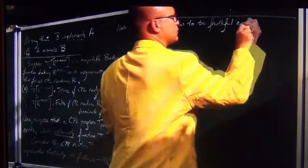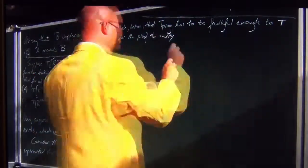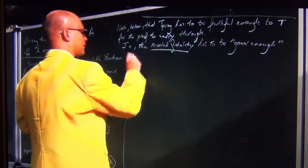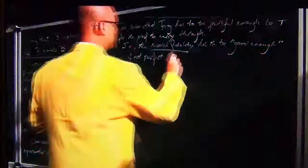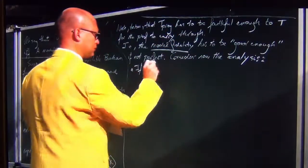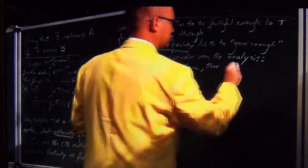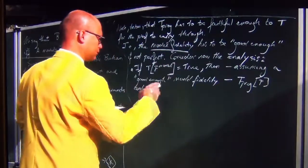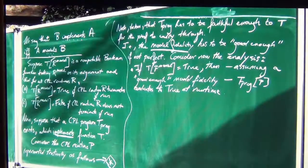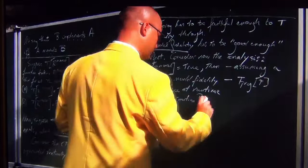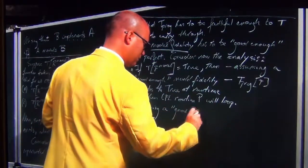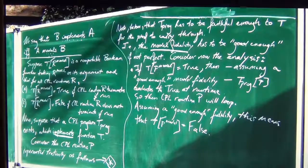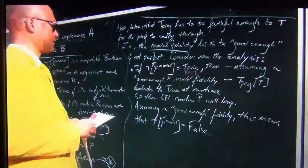Note that T-program has to be faithful enough to T for the proof to carry through — i.e., the model fidelity has to be good enough, if not perfect. This is something that Strachey did not consider at all. If T of P-model is true, then assuming good enough model fidelity, T-program of P evaluates to true, so CPL routine P will loop. Assuming good enough model fidelity, T is false. You can do the same analysis by changing true to false and false to true, and then 'will loop' to 'will terminate'.